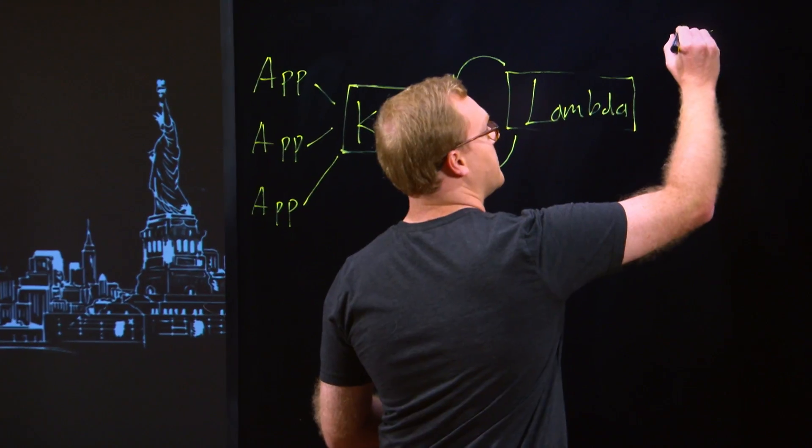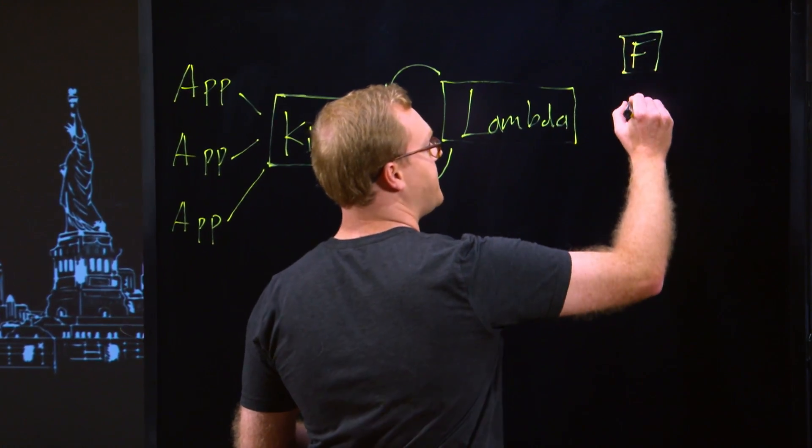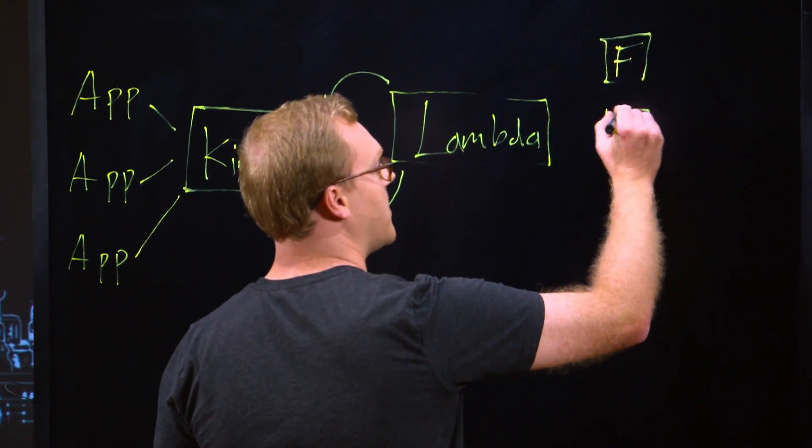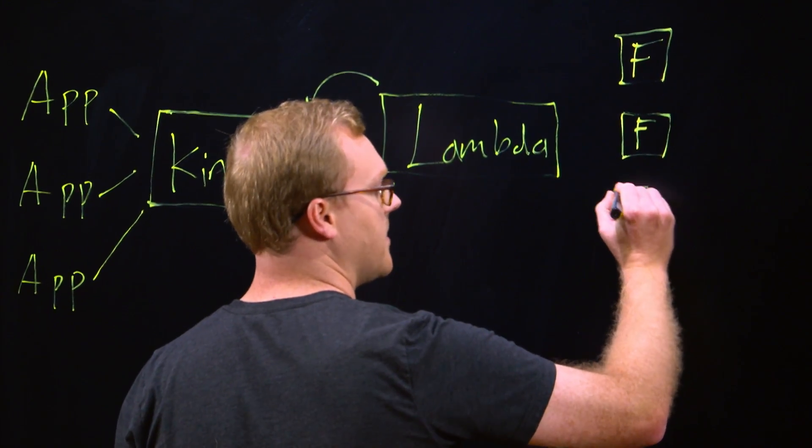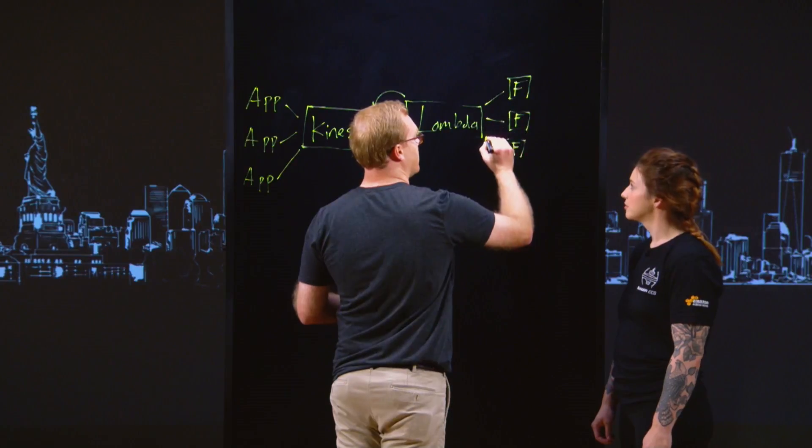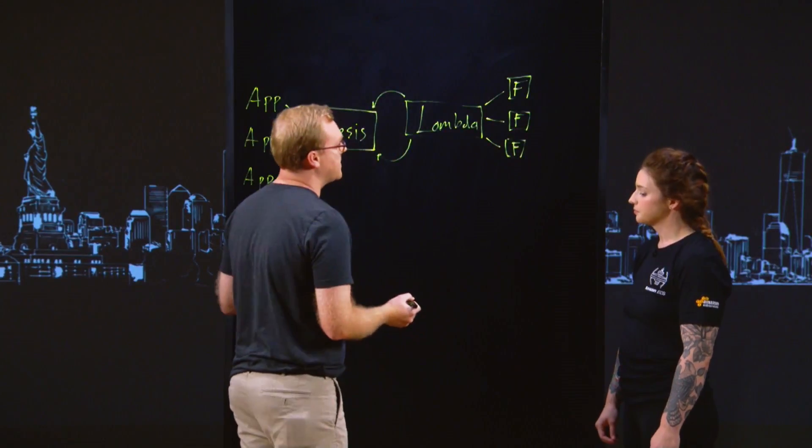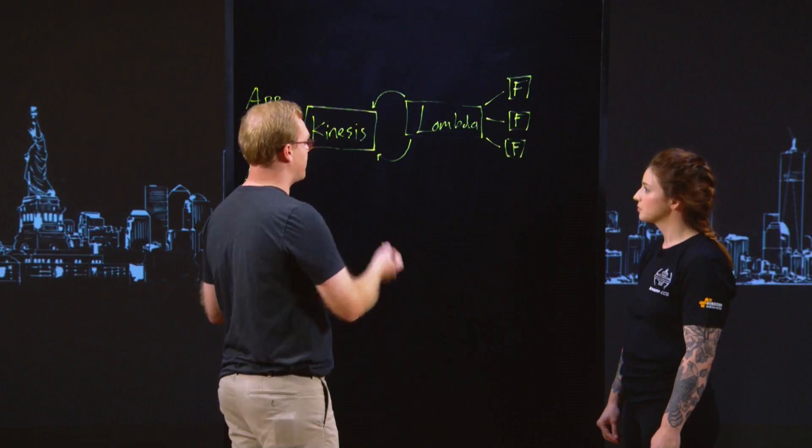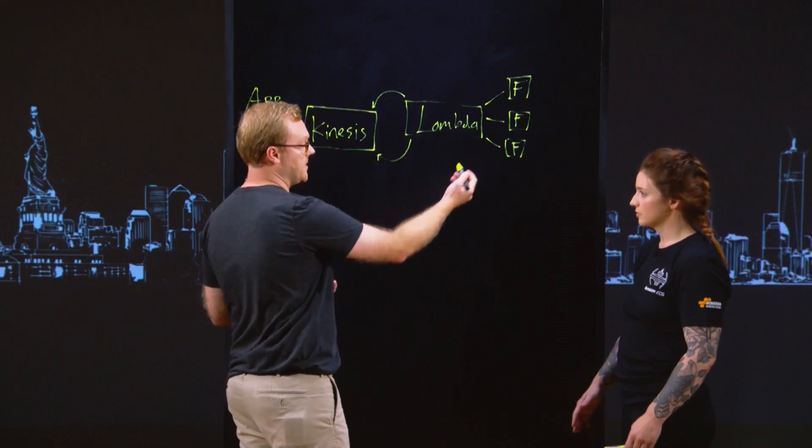So we can picture, I'm just going to draw an F for a Firehose stream. Yep. We can picture quite a few of these. Each one is dedicated to a type of event that we're working with. Okay. So this Lambda is routing the events to the Firehose streams. So now we've got them from Kinesis to Lambda into Kinesis Firehose.